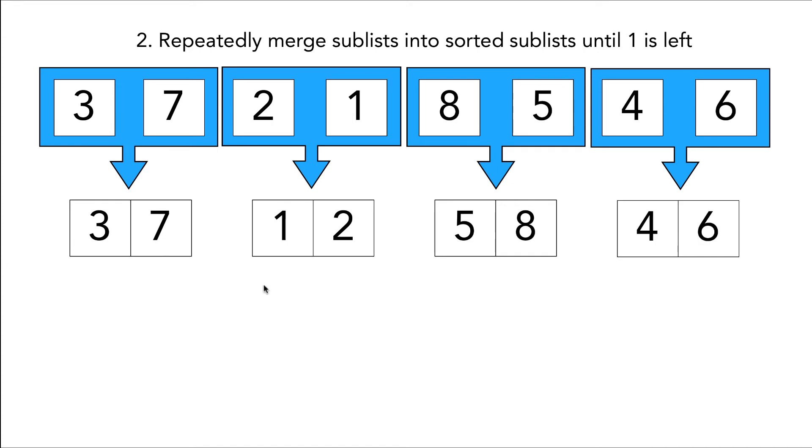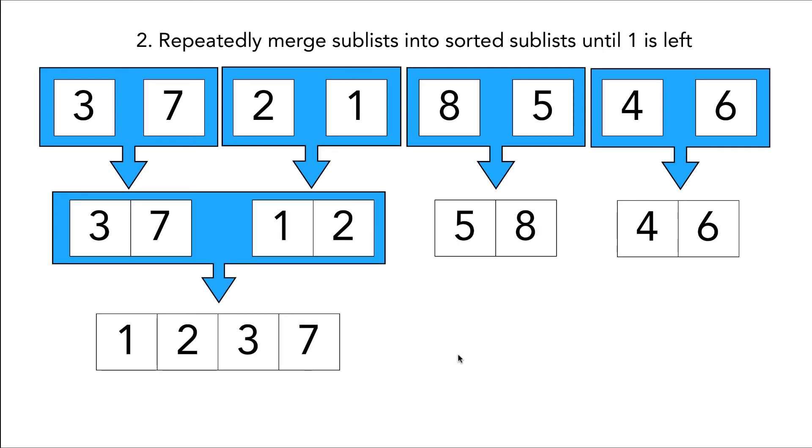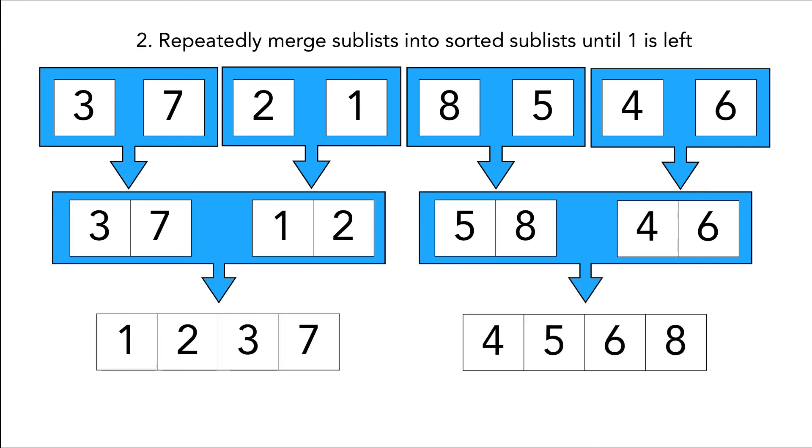Now with our newly created arrays we're gonna merge these two and these two so we say one two three seven, four five six eight. And then last but not least we're gonna merge our two four item arrays into one massive eight item array that will be sorted and we get one two three four five six seven eight. Fantastic.